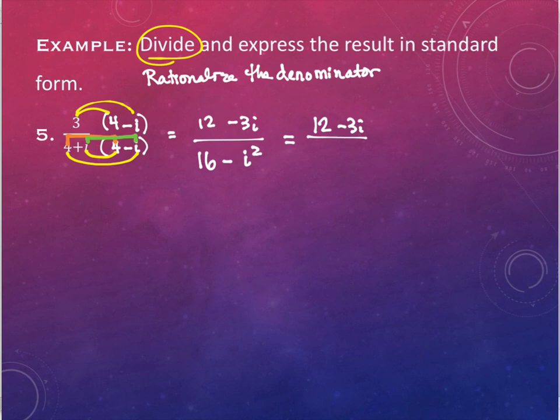The i squared on the bottom is negative 1. So instead of 16 minus i squared, it becomes 16 minus negative 1, which is the same as 16 plus 1, or 17.